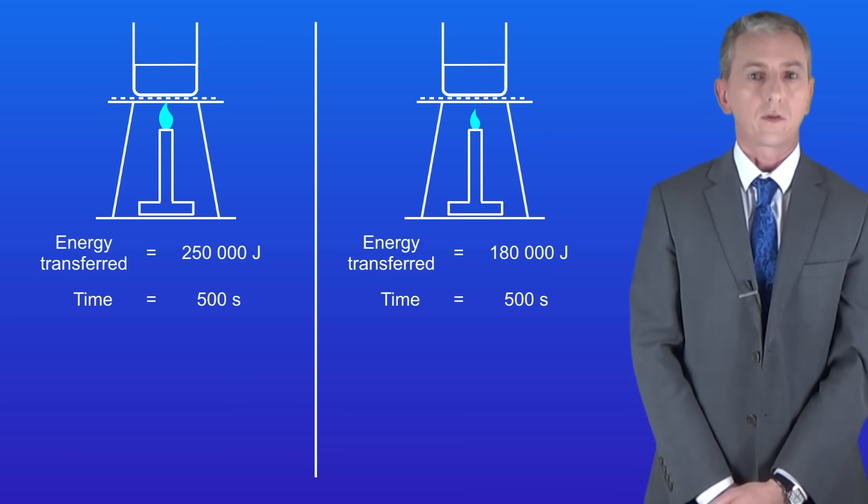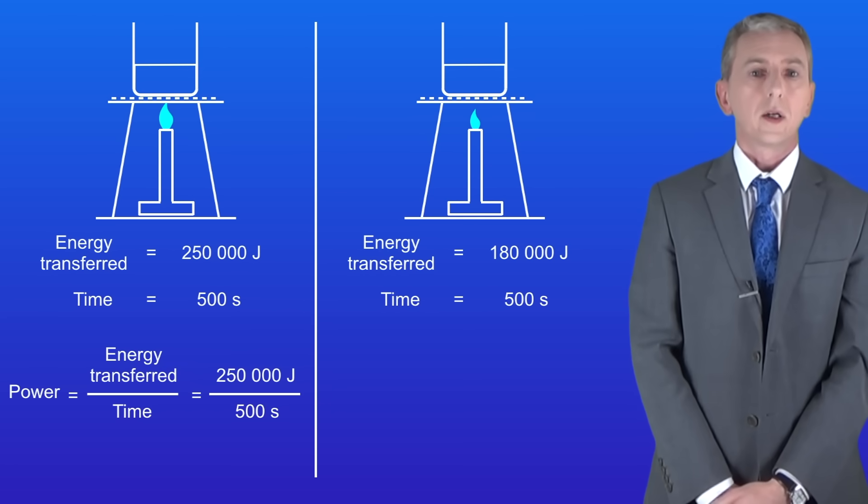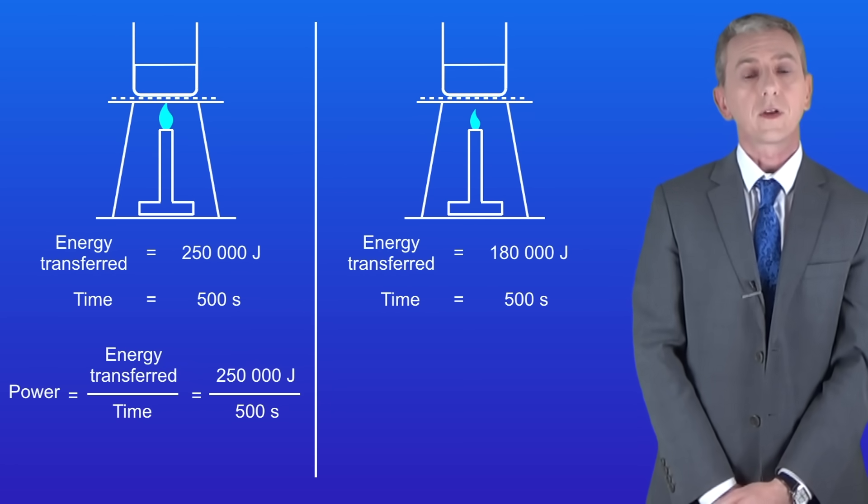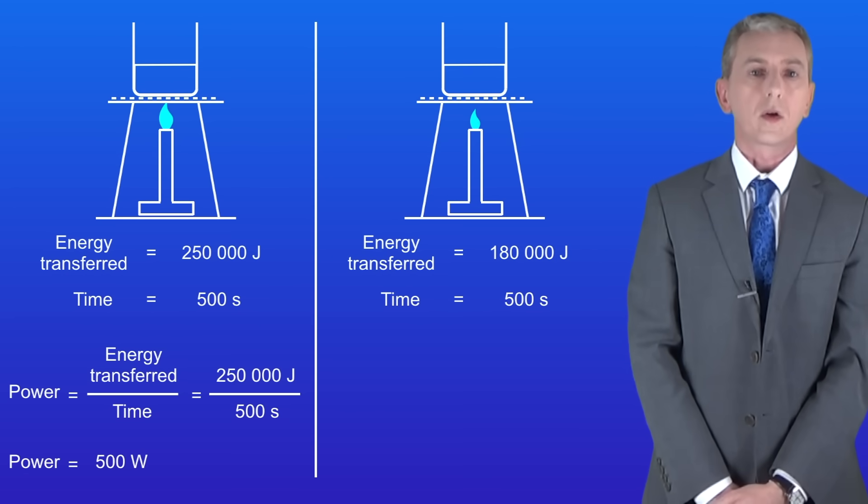The power is the energy transfer divided by the time so if we look at the left hand Bunsen burner we can see that we've transferred 250,000 joules of thermal energy in 500 seconds. Putting these numbers into the equation gives us a power of 500 watts.